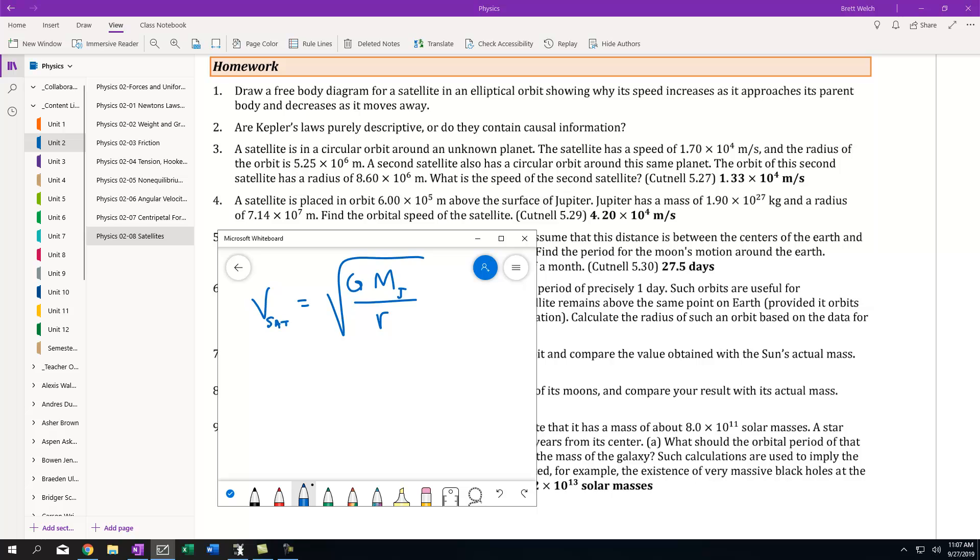Things we have to be aware of: gravity's universal constant is 6.673 times 10 to the negative 11. The mass of Jupiter is given and needs to be in kilograms, which it is: 1.9 times 10^27 kilograms.